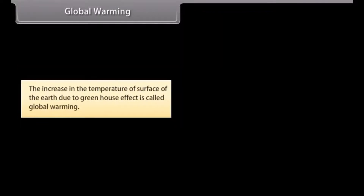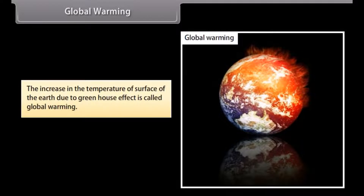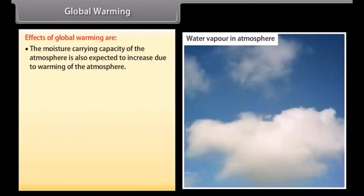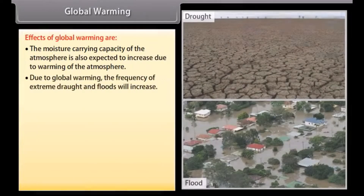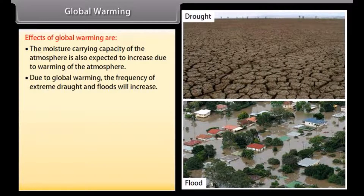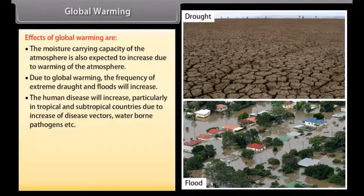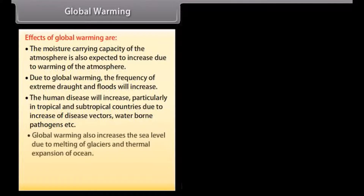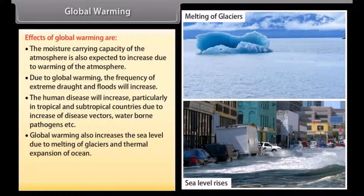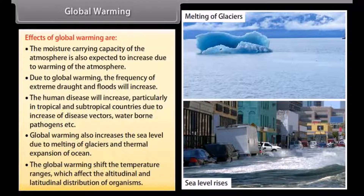Global warming is the increase in the temperature of the surface of the earth due to the greenhouse effect. Effects of global warming include: the moisture-carrying capacity of the atmosphere is expected to increase; the frequency of extreme drought and floods will increase; human disease will increase particularly in tropical and subtropical countries; sea levels will rise due to melting of glaciers and thermal expansion of oceans; and the temperature ranges will shift, affecting the altitudinal and latitudinal distribution of organisms.